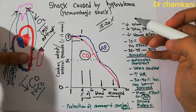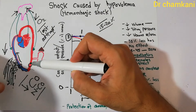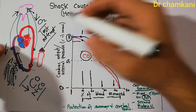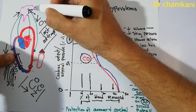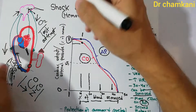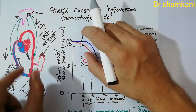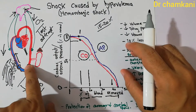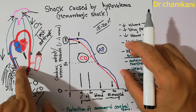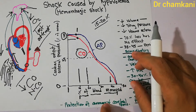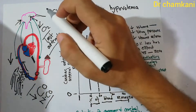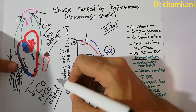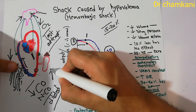During all these compensatory mechanisms, even with extensive arteriolar and venous constriction, there is protection of coronary and cerebral blood flow. The blood flow to the heart muscles and to the brain is not reduced. Rather, the coronary and cerebral vessels are dilated, so that the amount of blood flowing to the heart and brain is increased rather than decreased, ensuring these vital organs continue to receive adequate oxygen.